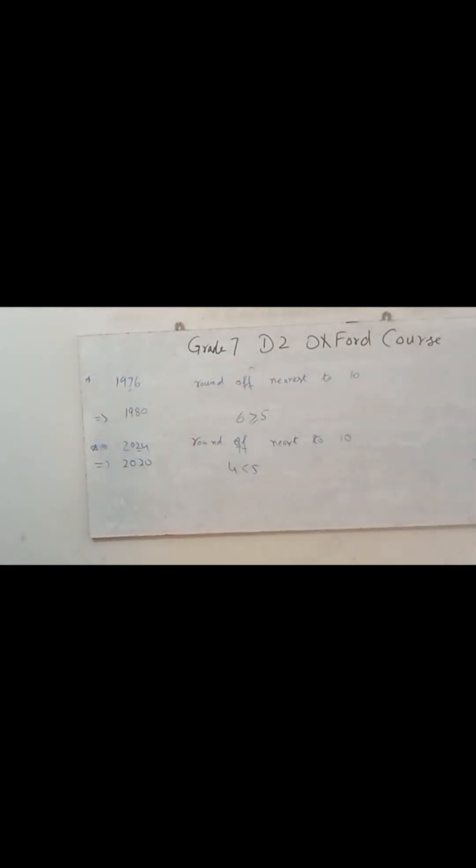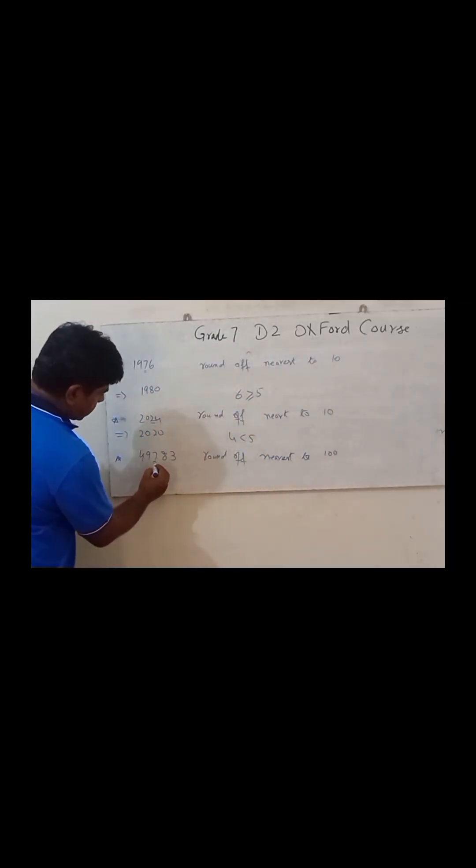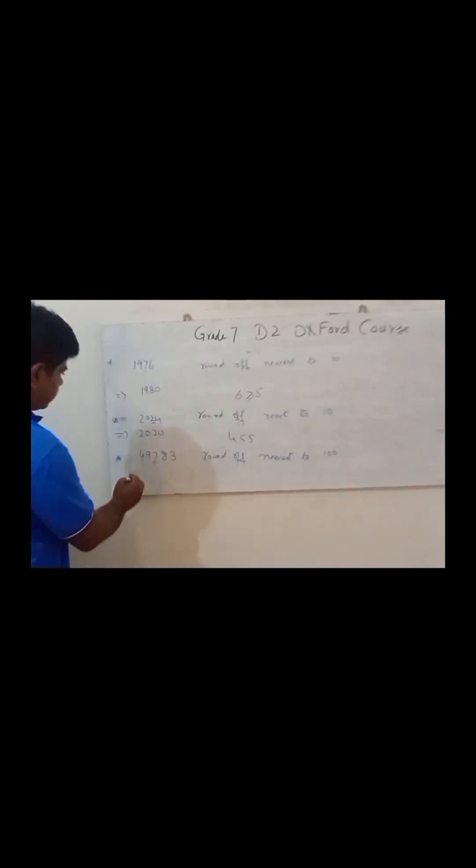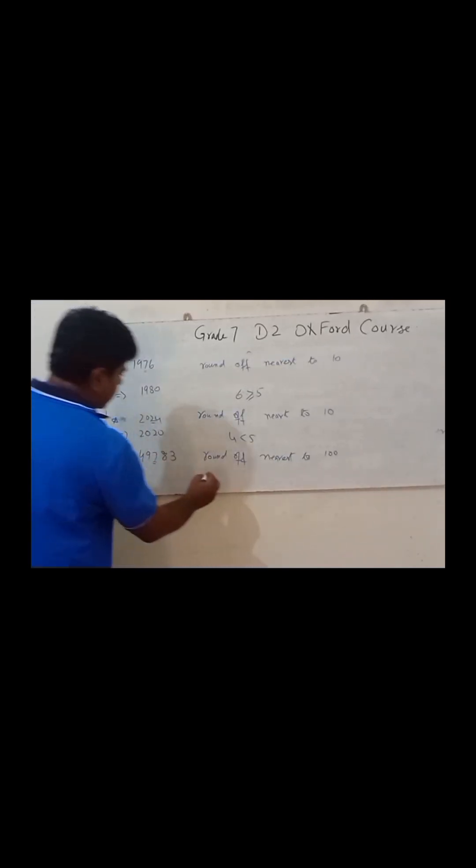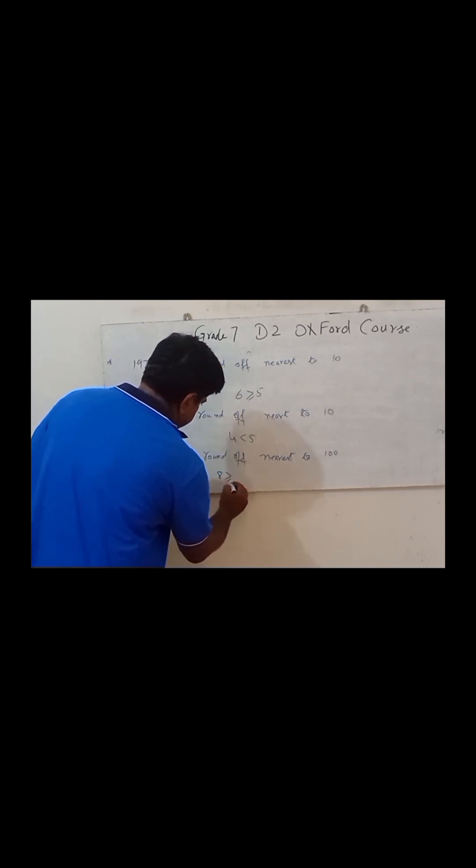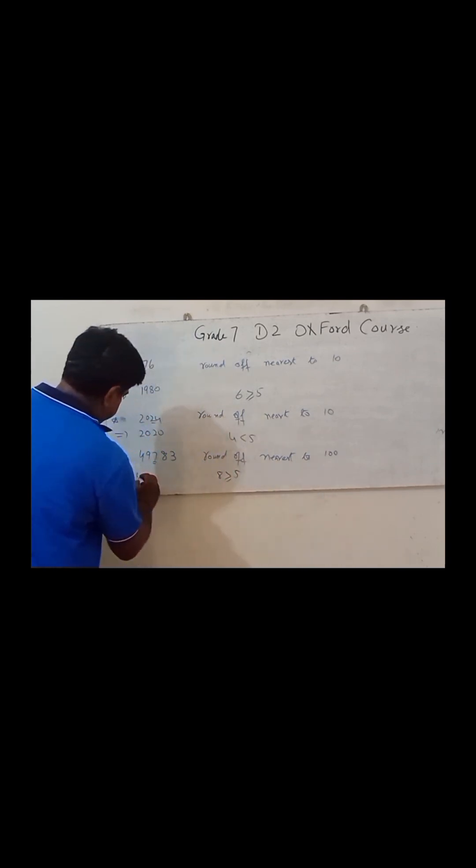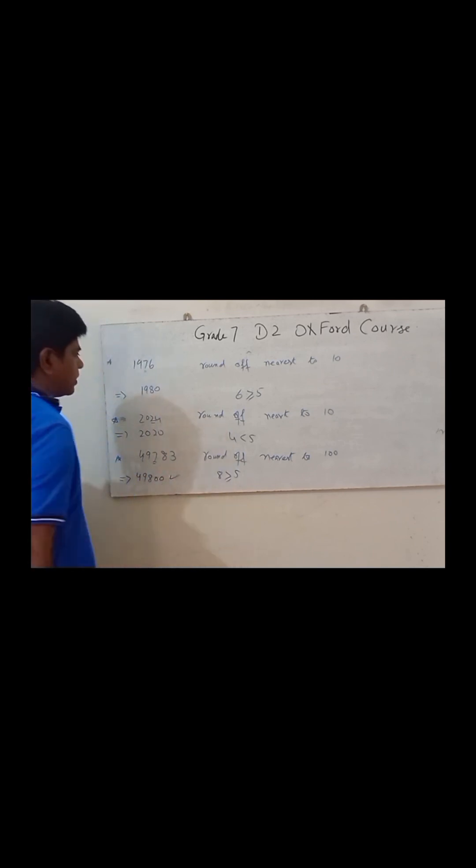In this example as well, here we have seven at this place. After rounding off, since eight is greater than five, we will have 749800. This will be the answer.